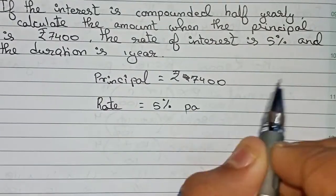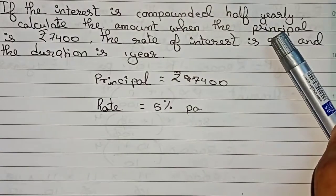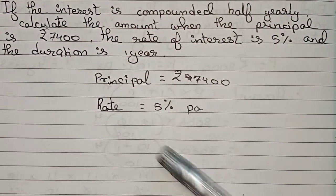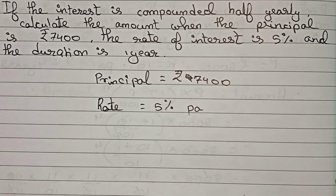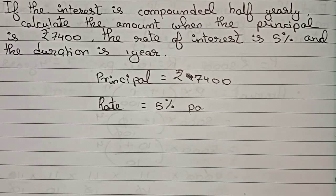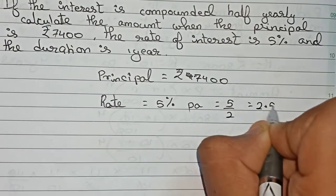Per annum. Now in the question it is given that it is compounded half yearly. You know 5% is the interest for the whole year, so that means for half year it will be 5 divided by 2, which becomes 5/2, equal to 2.5%.